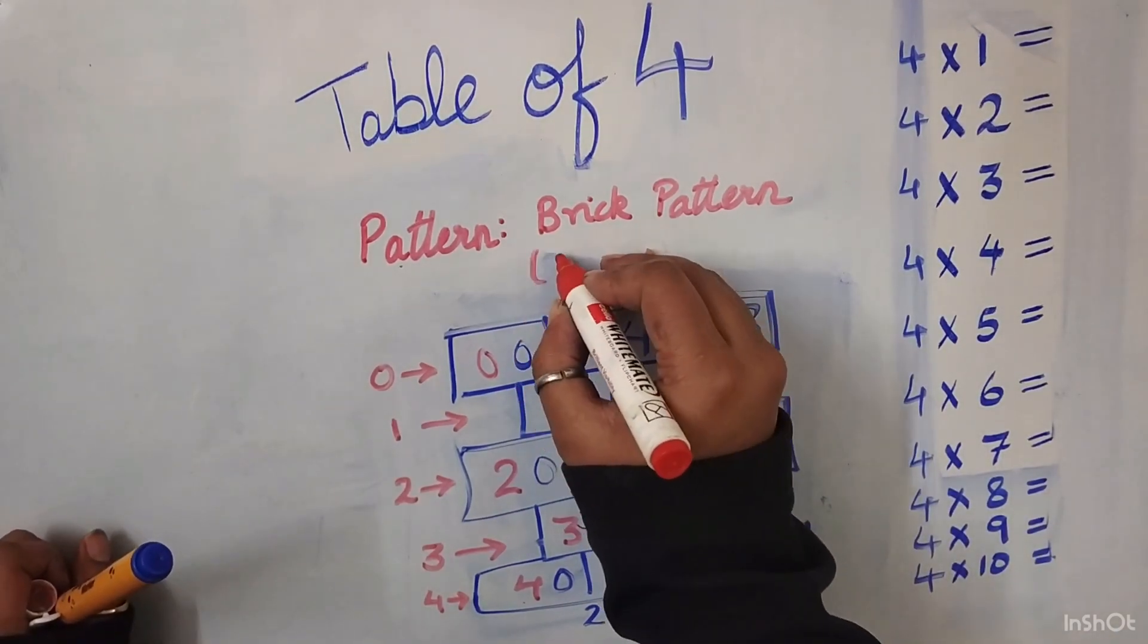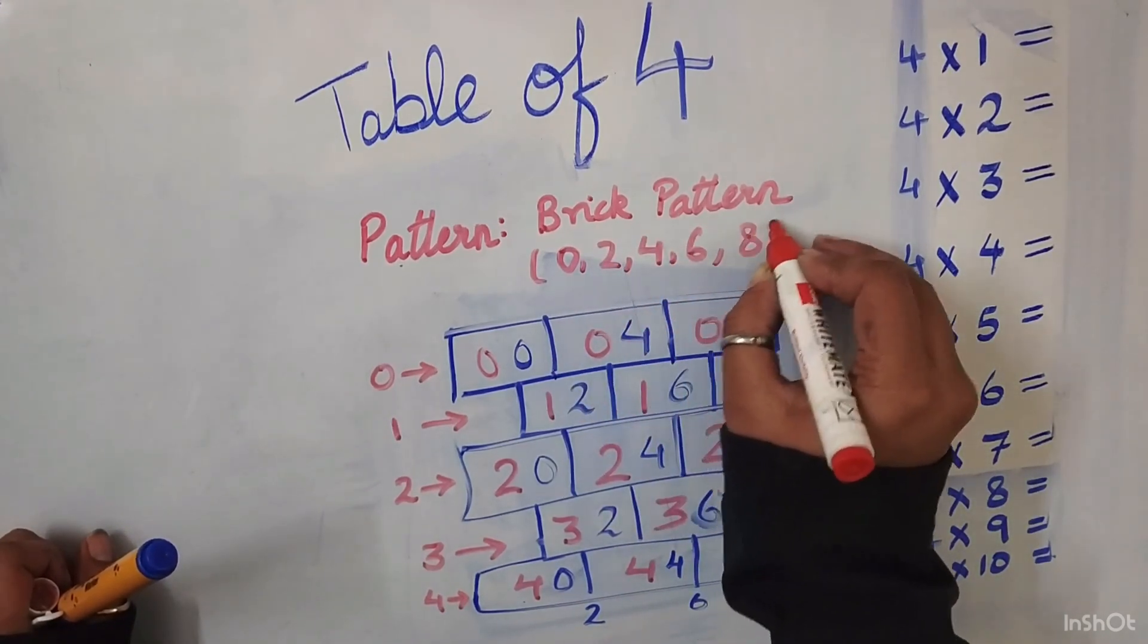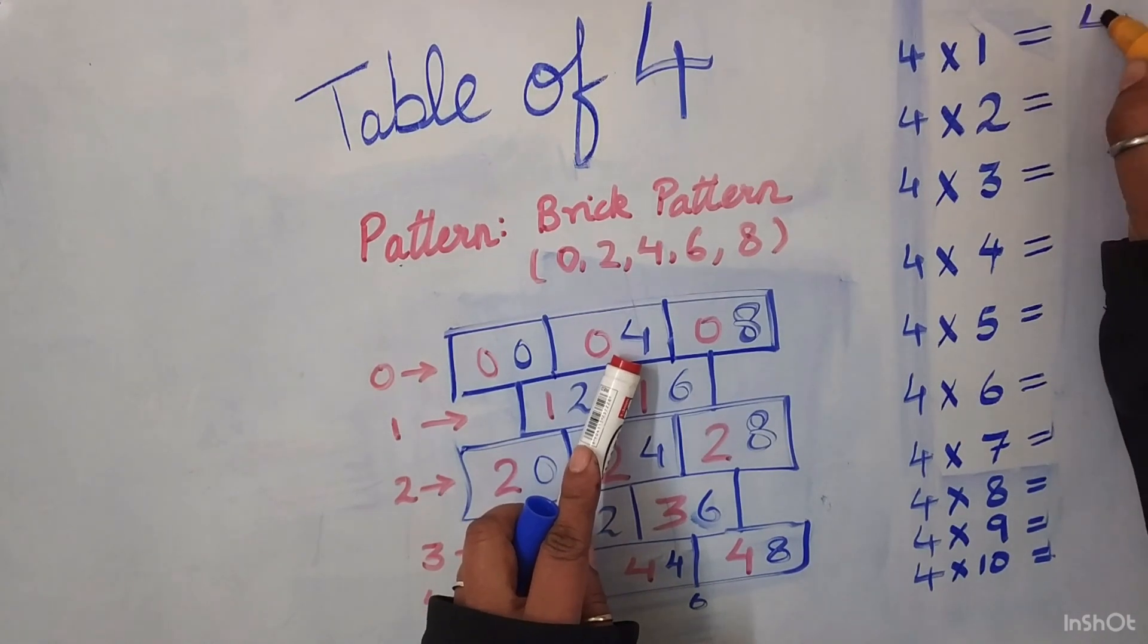That brick wall is complete with numbers. Let me write the pattern on top: 0, 2, 4, 6 and 8.